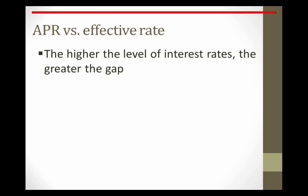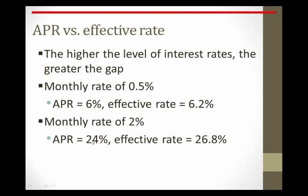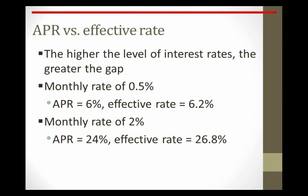In general, the higher the level of interest rates, the greater the gap between APR and the effective rate. For example, a monthly rate of 0.5% gives an APR of 6% and an effective annual rate of 6.2%. But if the monthly rate is 2%, the APR is 24% while the effective rate is 26.8%. The gap gets much larger as the level of interest rates increases.